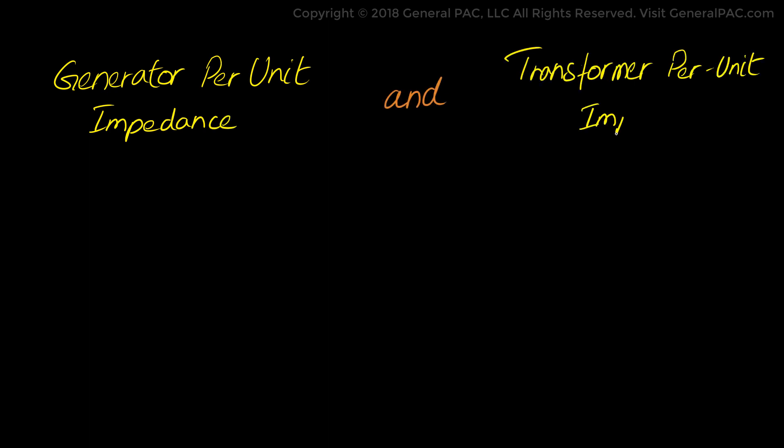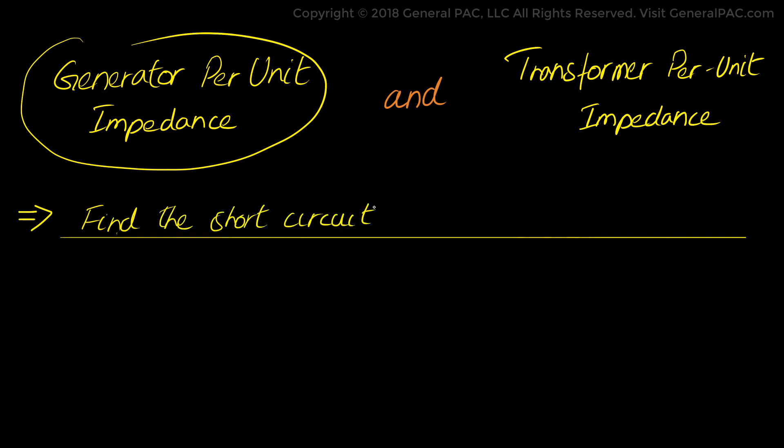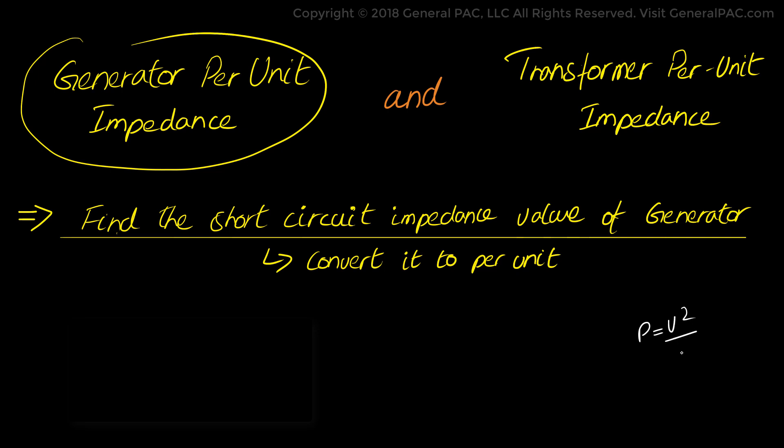Now let's derive the generator per unit impedance as well as the transformer per unit impedance. We will start with the generator per unit impedance derivation. We must find the short circuit impedance value of the generator and convert it to the per unit value. Now for this we go back to our legacy formula which is P is equal to V squared divided by R. Rearranging it to solve for R, in this case it's the Z short circuit is equal to 115 kV squared divided by 600 MVA. That is equal to 22.04 ohms.